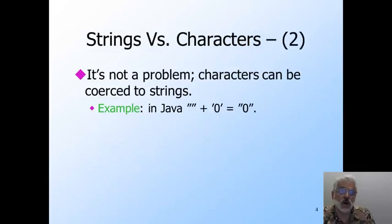But there is no real problem, since a character can be coerced to be a string of length one. It's in fact very natural in programming languages. For example, in Java, an easy way to convert characters to strings is to write the empty string concatenated with that character. Since characters are coerced to strings, the character, say zero, is converted to the string zero, and concatenated with the empty string, which leaves just the original character, but converted to a string of length one.